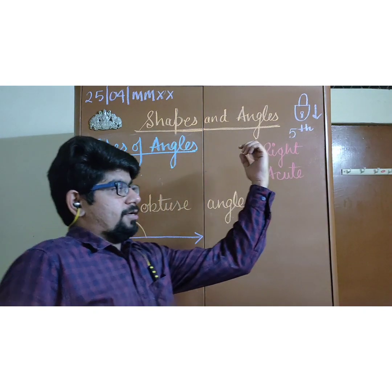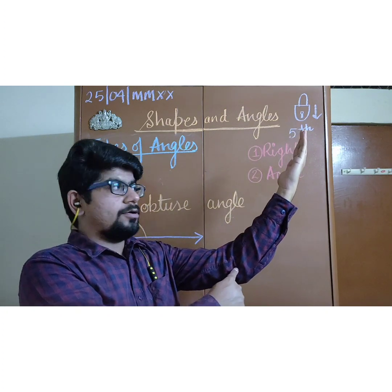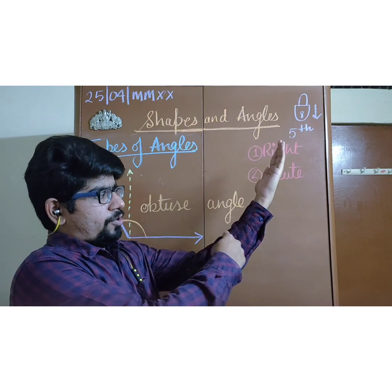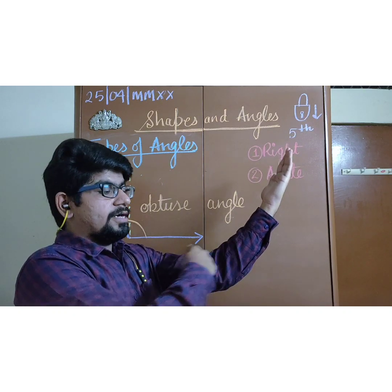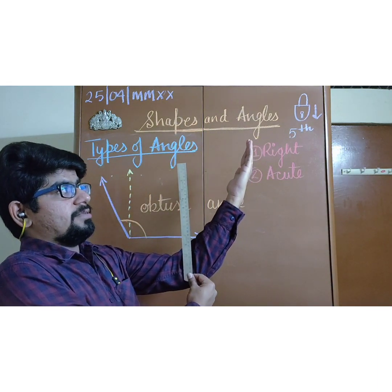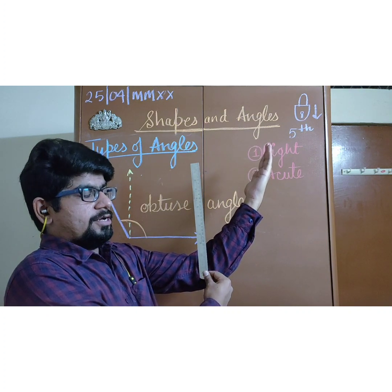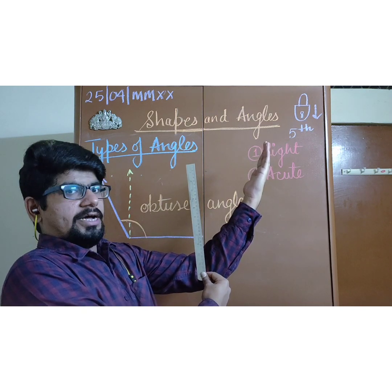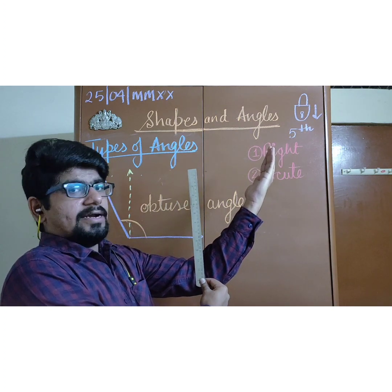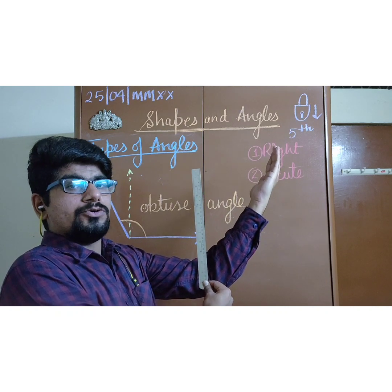Let us see again. You can see the position of my arm. If this is one arm of an angle and this is the other arm, the amount of turn is more than the right angle. I am taking the scale and keeping it to show the virtual right angle with reference to the lower line. This arm is making an angle which is more than 90 degrees — more than a right angle — so this type of angle is known as an obtuse angle.